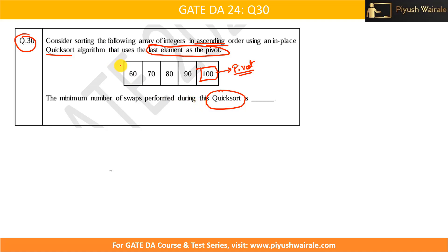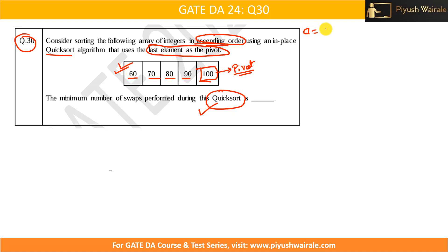We need to sort this array in ascending order. But if you observe this array — 60, 70, 80, 90, 100 — it is already sorted in ascending order. So how many swaps are required? Let's discuss what happens when we apply the quicksort algorithm to this already-sorted array.